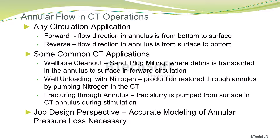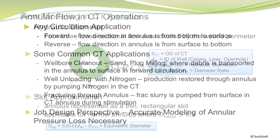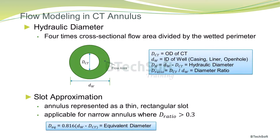From a design perspective, accurate modeling of annular pressure losses is necessary to estimate the bottom hole pressure correctly and ensure operational success. So, how do we model the flow in the coil tubing annulus?